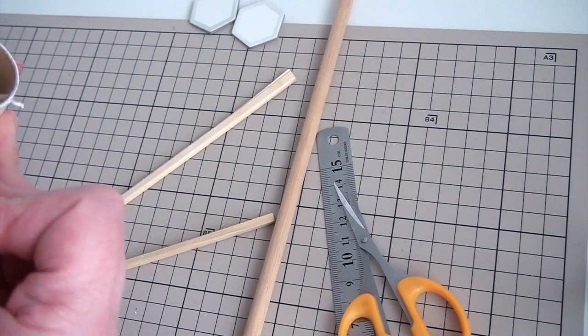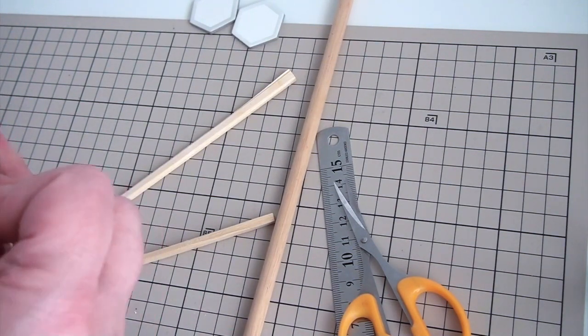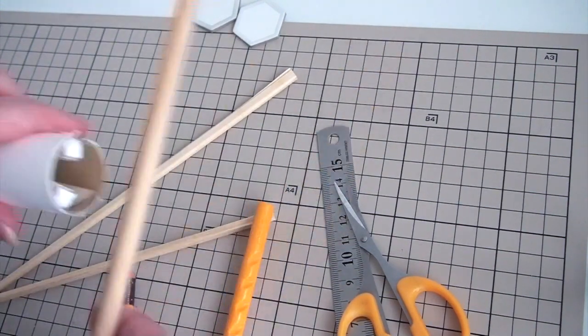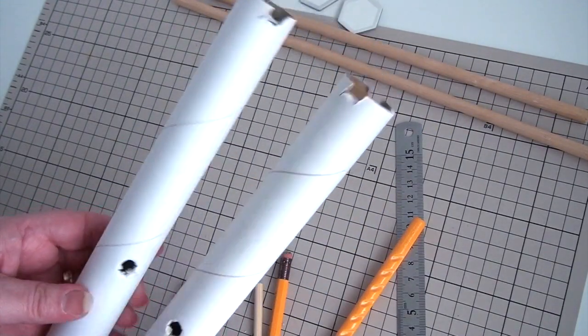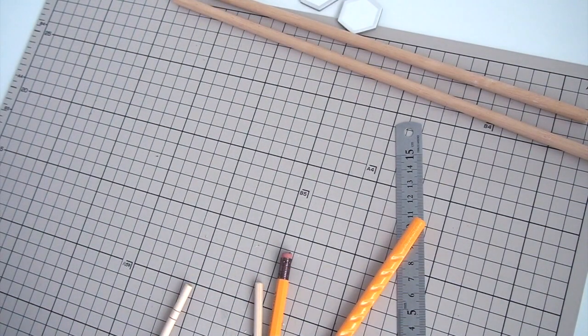We left the dowel a little bit above the edge of the paper roll because we didn't want our hexagon plate to be completely flat. Check if everything is okay. Put it together once but don't glue it together yet.